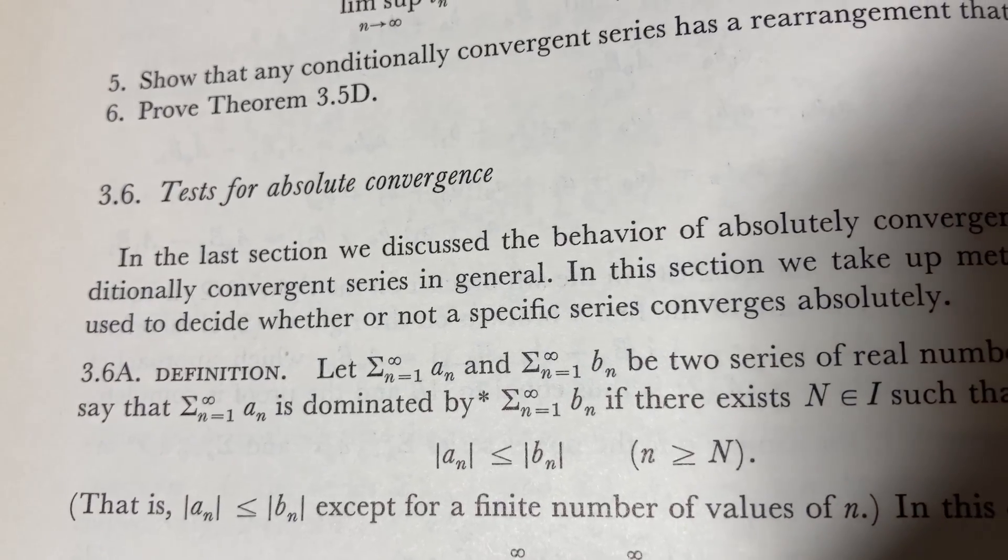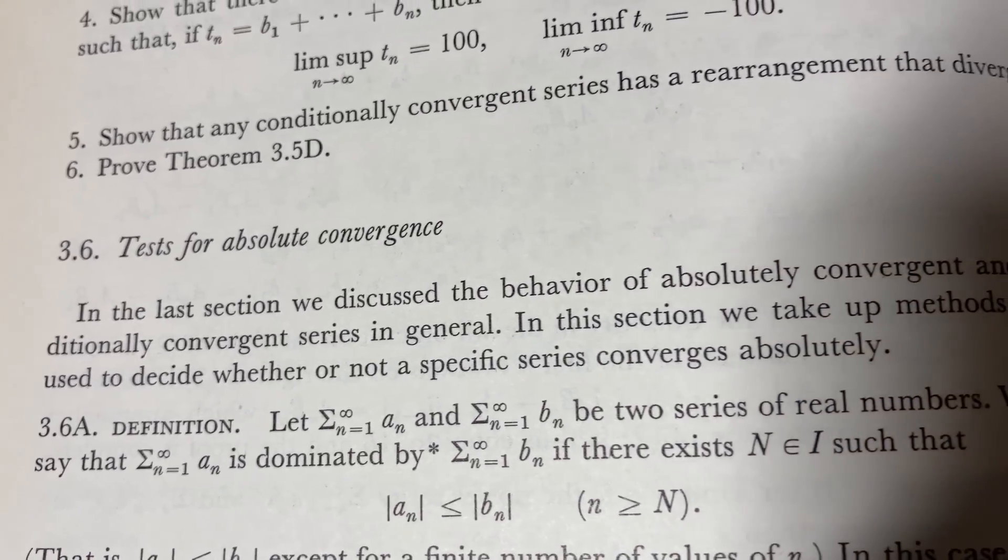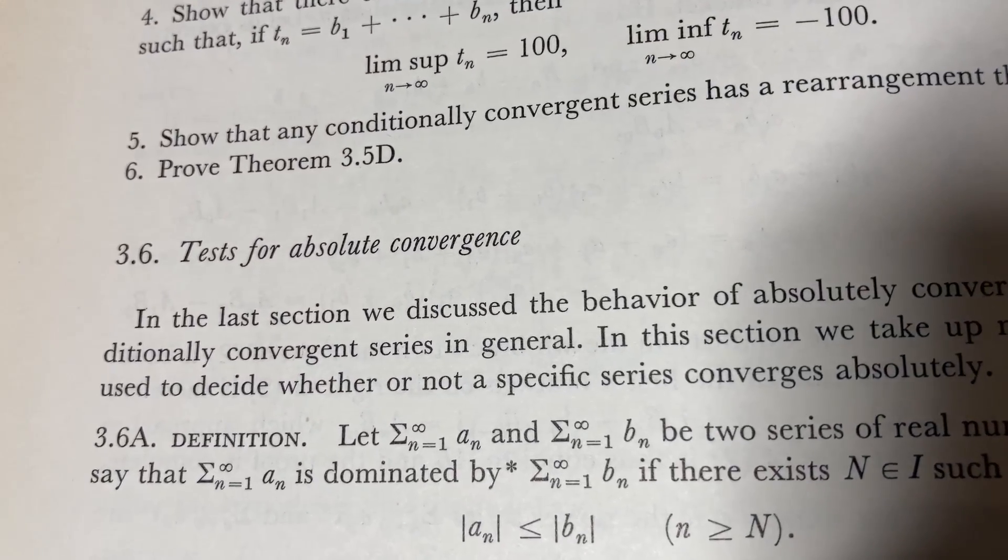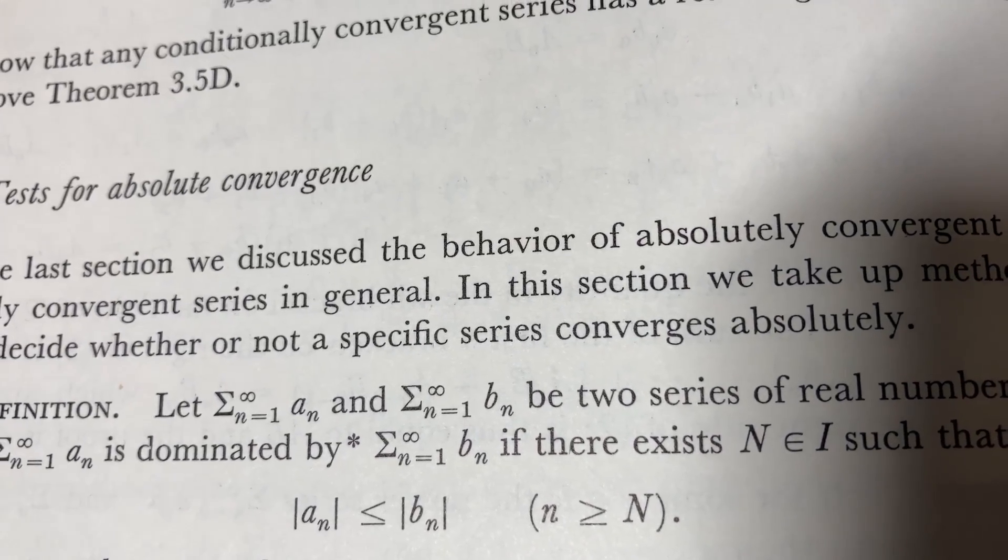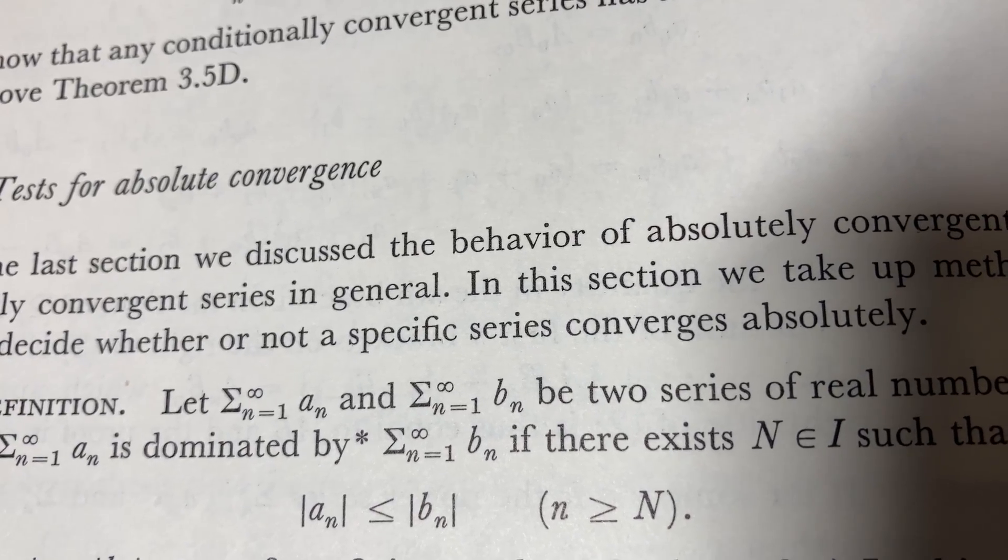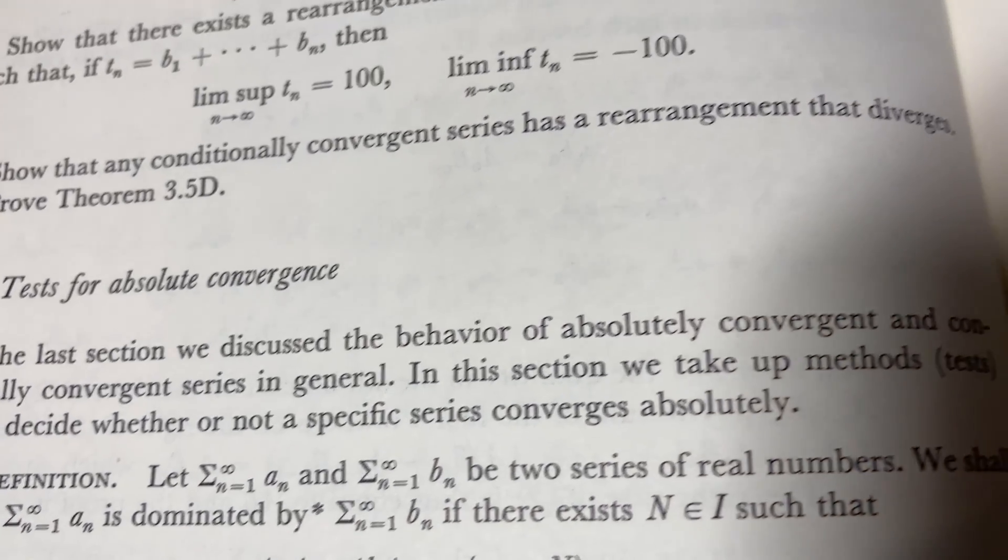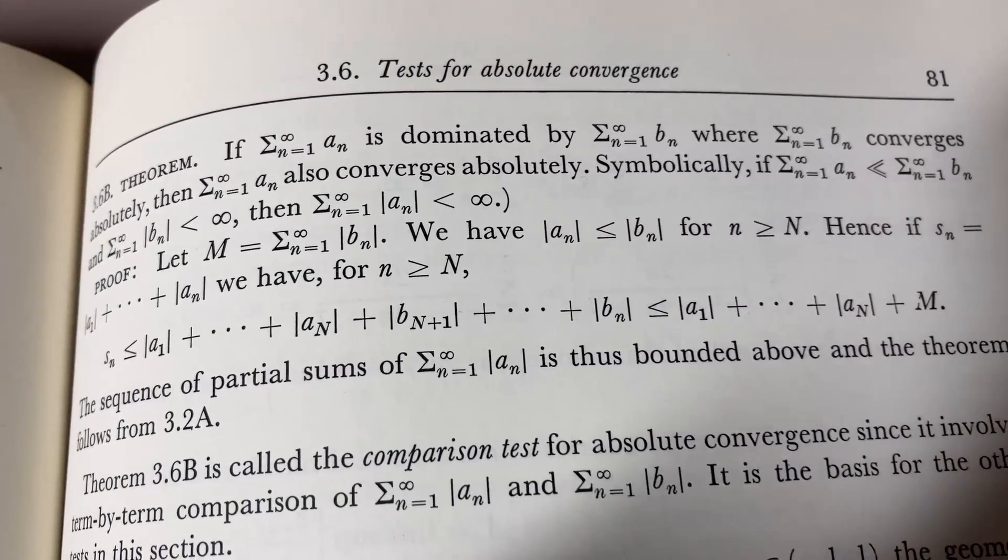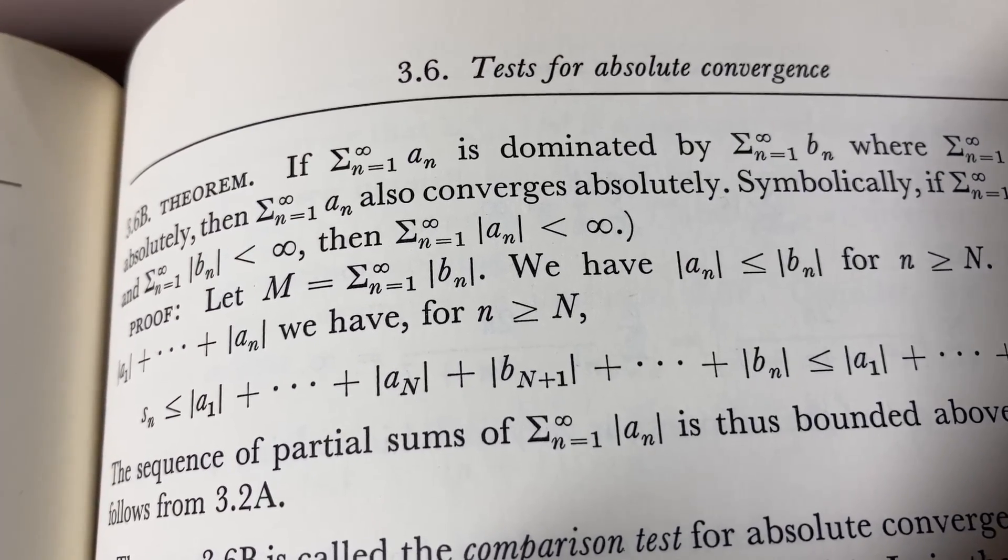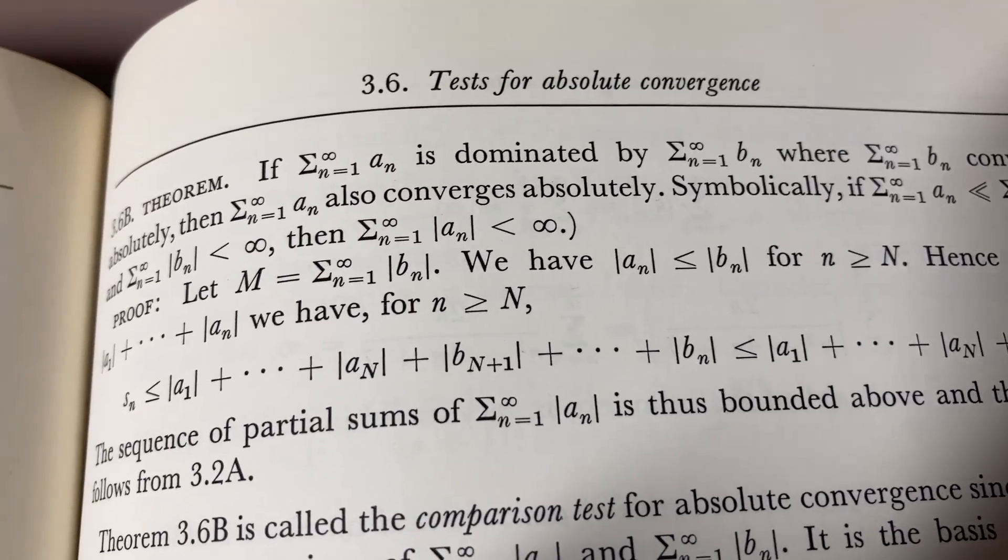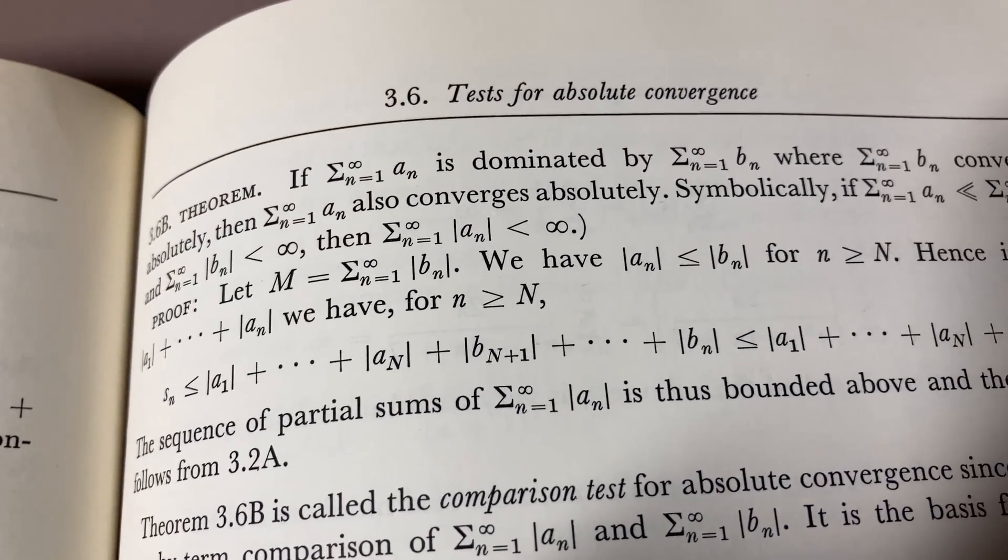Here we have a definition where he describes what it means for one series to be dominated by another series. So we have the sum of the a's and the sum of the b's. They are series of real numbers. We will say that the sum of the a's is dominated by the sum of the b's if there exists an n such that the absolute value of a sub n is less than or equal to the absolute value of b sub n for n greater than or equal to big N. And he does this because he's basically creating a setup for what he calls the comparison test. If the sum of the a's is dominated by the sum of the b's, where the sum of the b's converges, then the sum of the a's also converges.